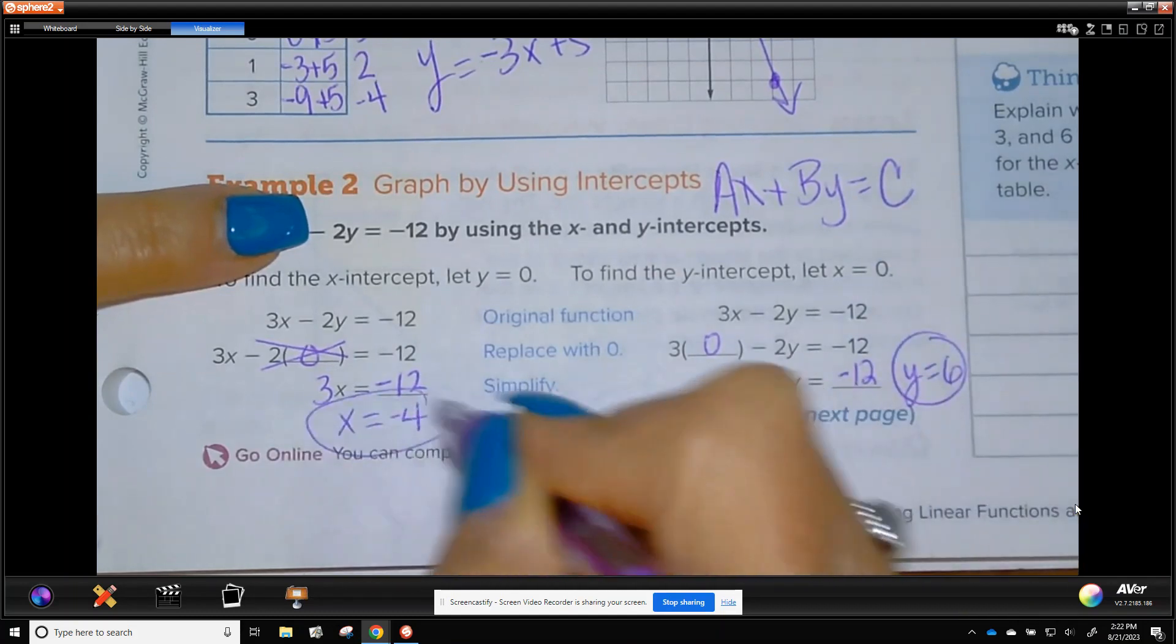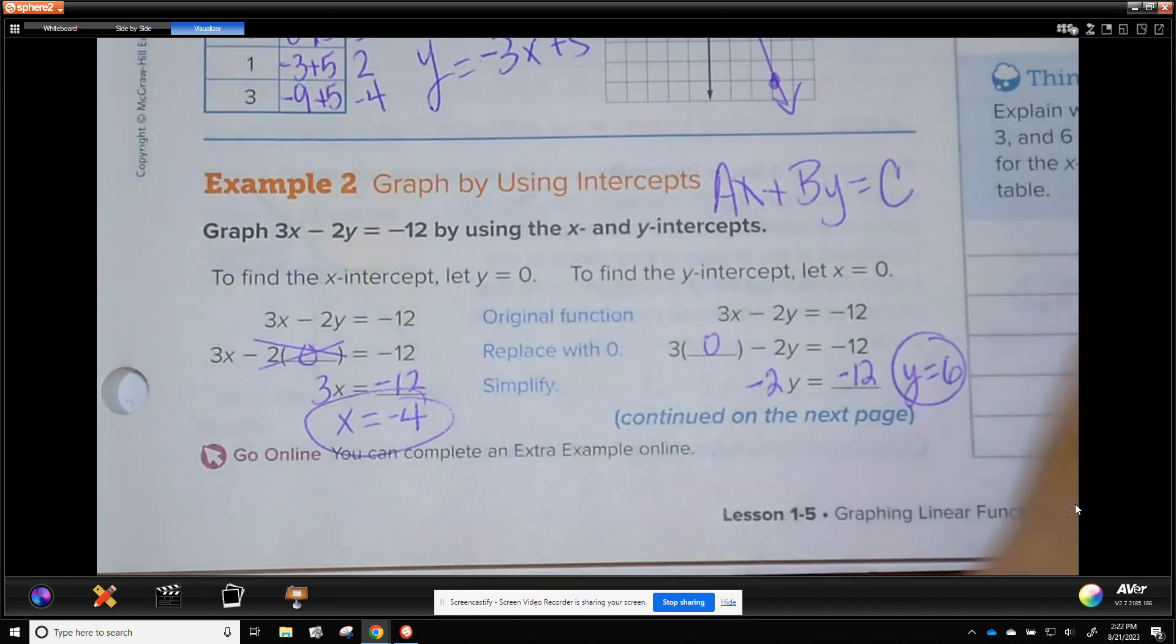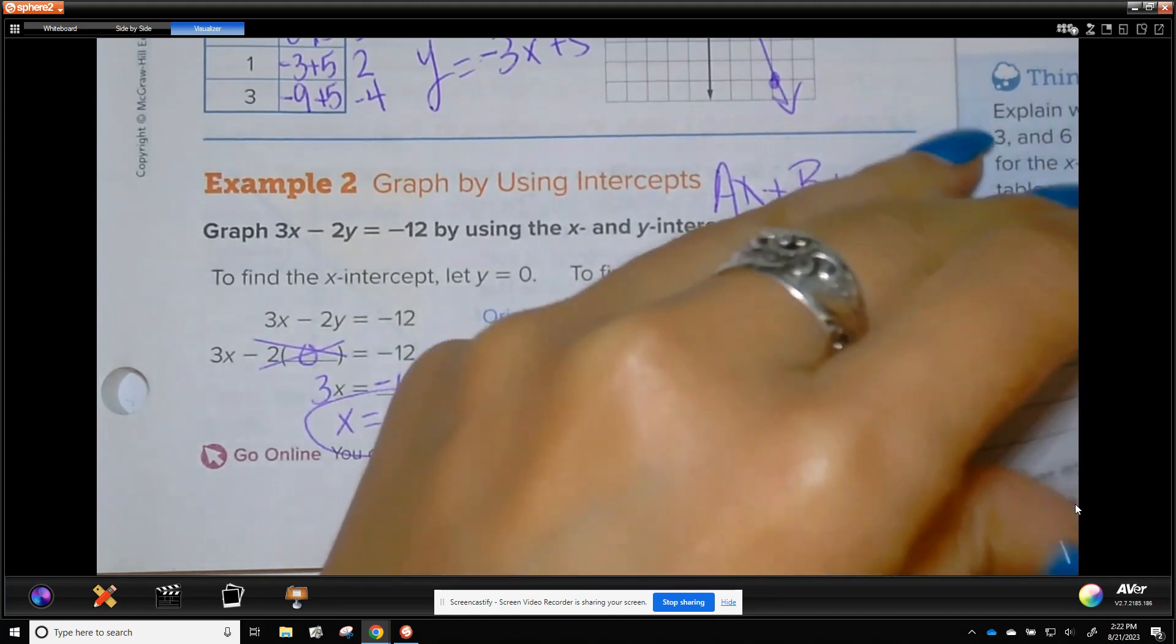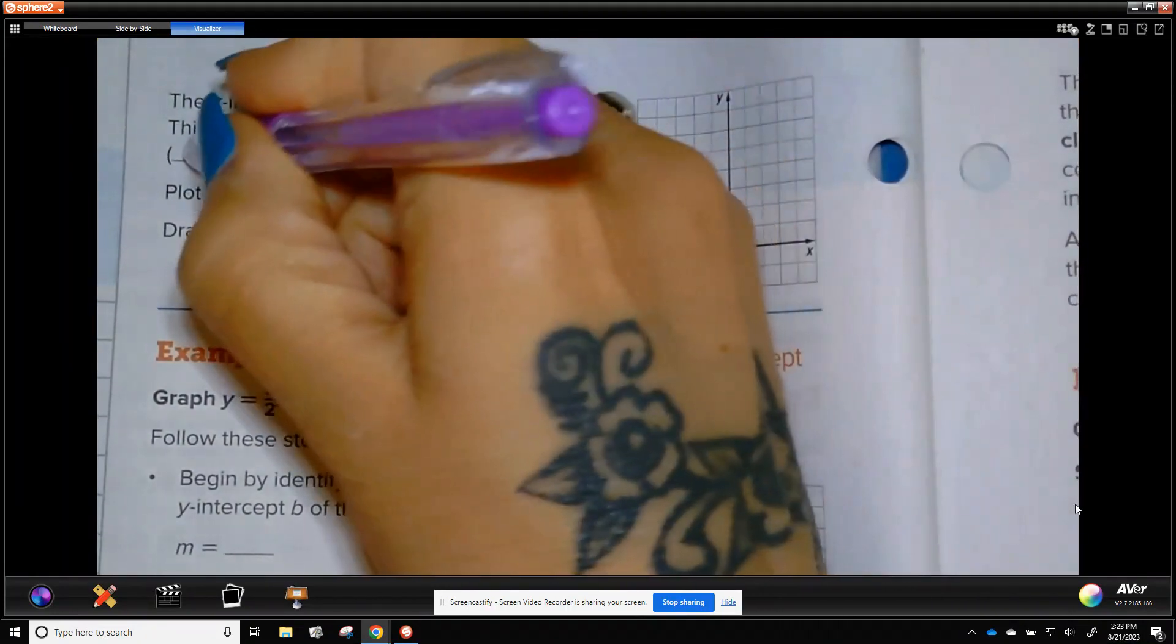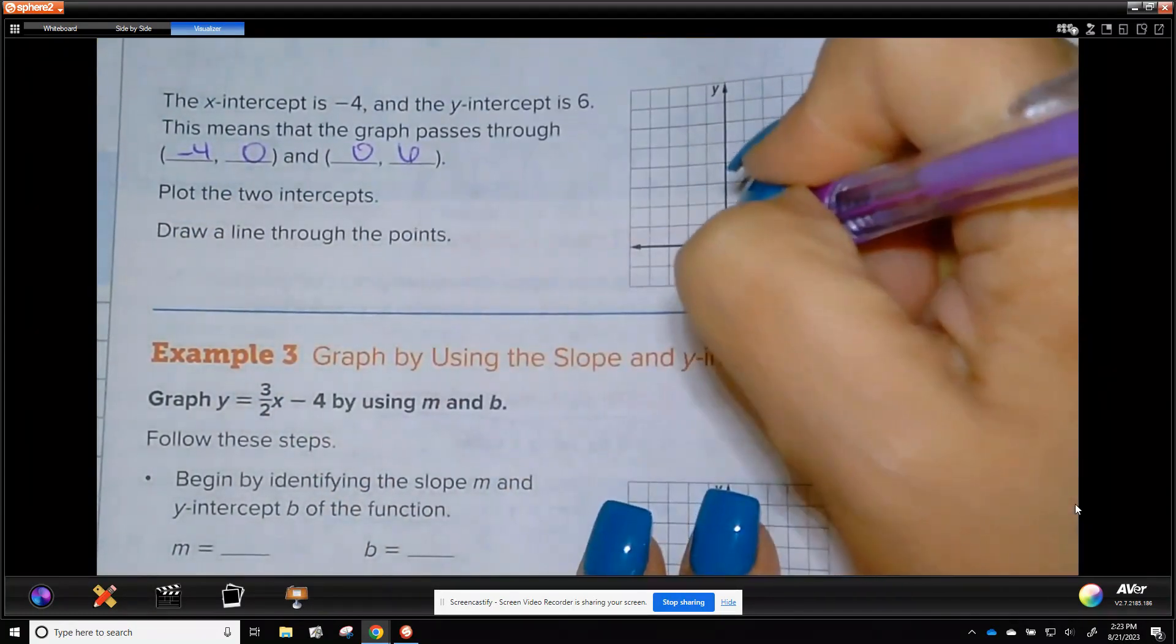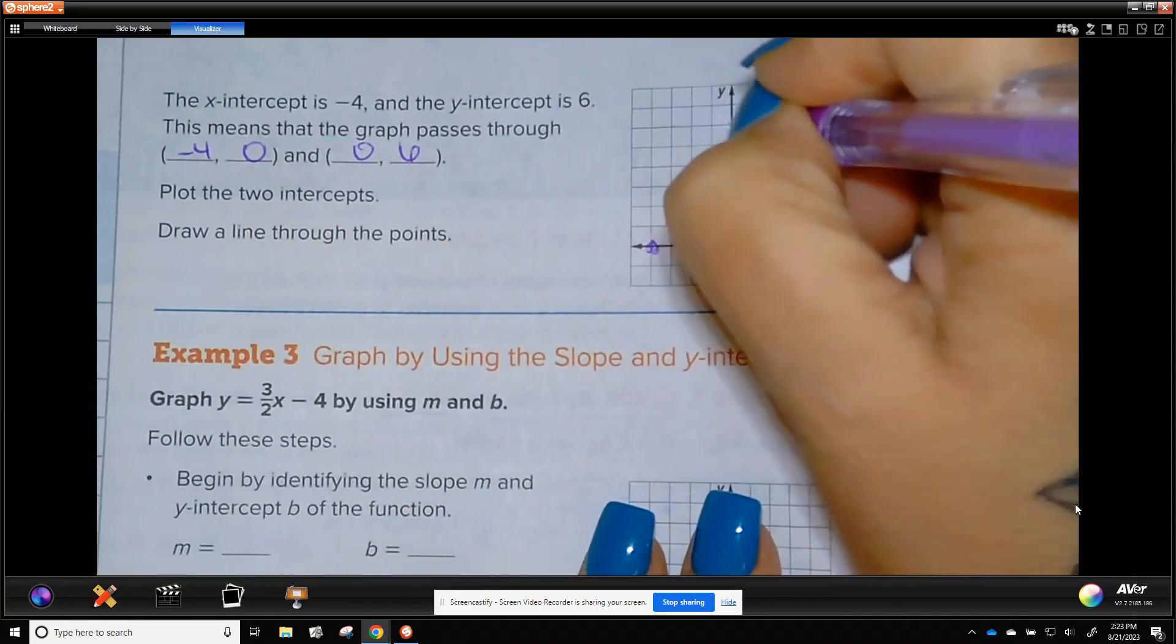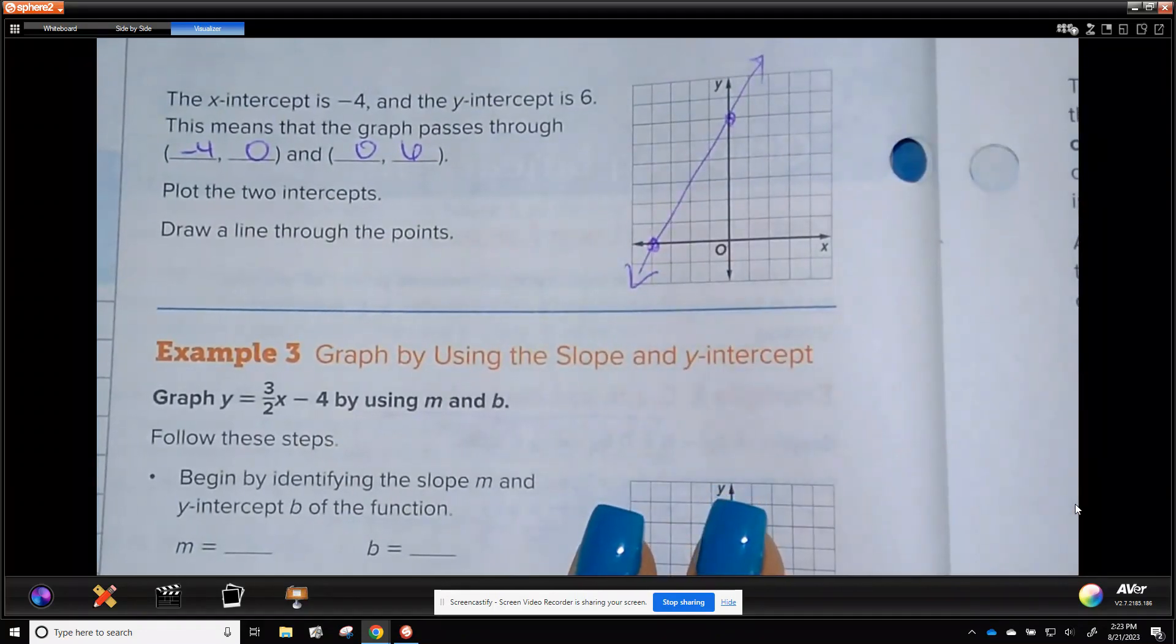So we have two points here. They're not written as coordinate points, but those are two points, and that's all you need for a graph. And they continue on the next page, negative 4 and 6. So negative 4 is negative 4, 0. 6 is 0, 6. So you go to negative 4, 1, 2, 3, 4, 5, 6, and draw your line.